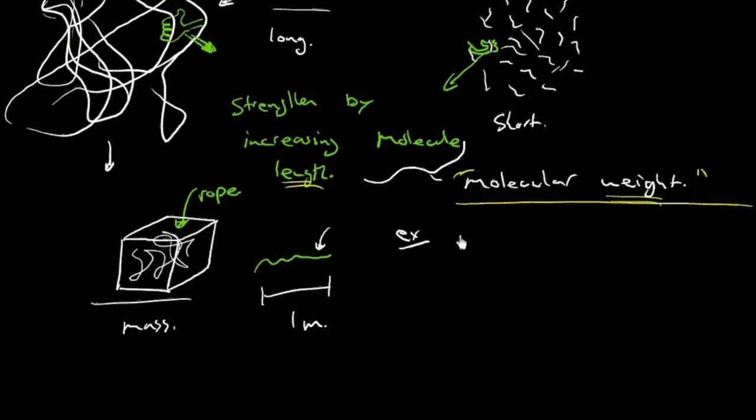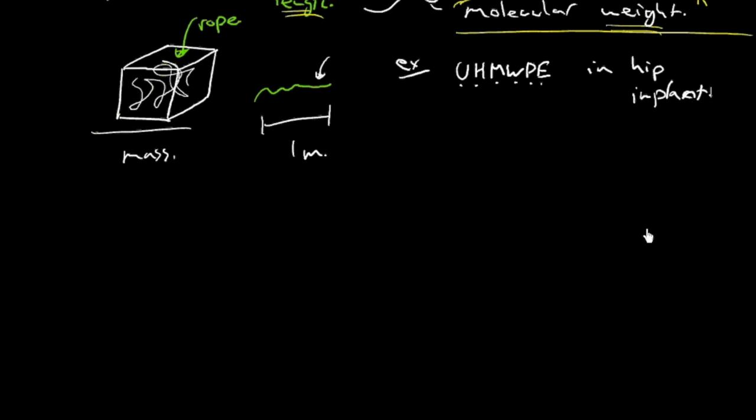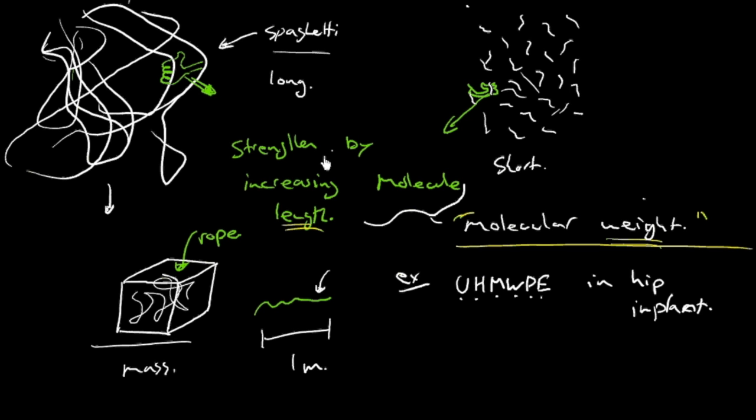So an example would be in biomaterials we use in hip implants. For example, UHMWPE, quite a mouthful. Ultra high molecular weight polyethylene. So ultra high molecular weight means these are really, really long molecules of polyethylene. And they're used in implant materials, hip implants particularly. Because it's quite a demanding mechanical environment. There's a lot of load on the joint. And there's a lot of frictional forces. And you could have quite extensive wear if the polymer wasn't strong enough. So ultra high molecular weight polyethylene helps to reduce that wear debris and allow the implant to last longer. So OK, we've covered molecular weight. Increasing molecular weight is a strengthening mechanism.